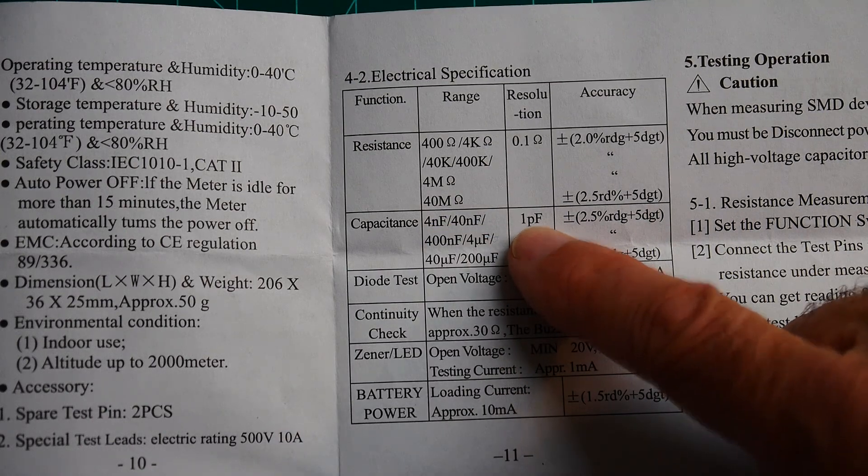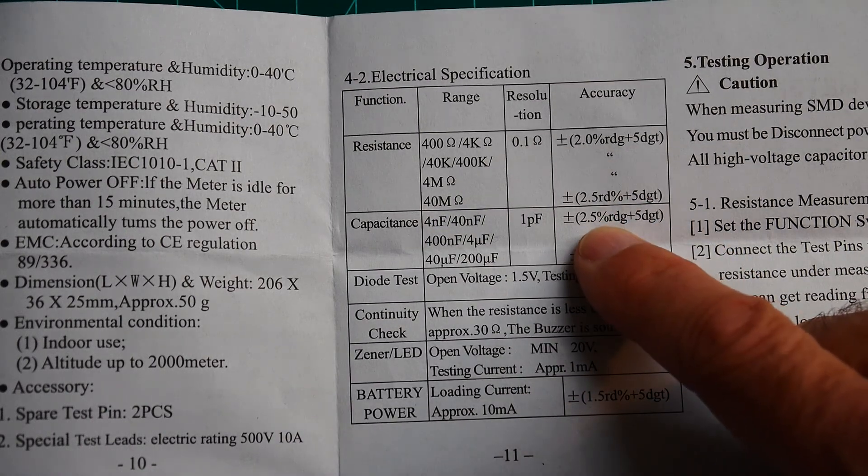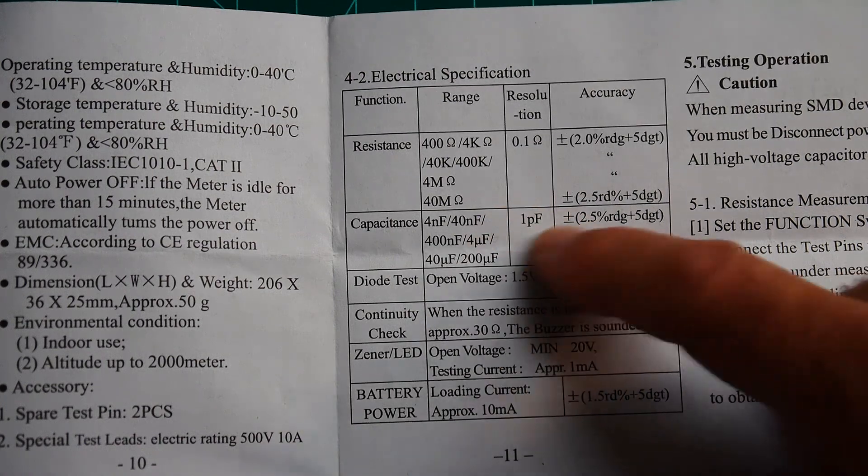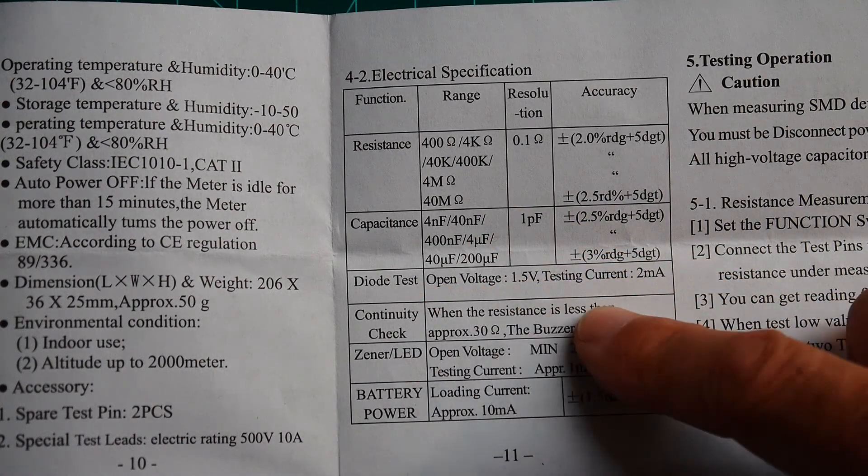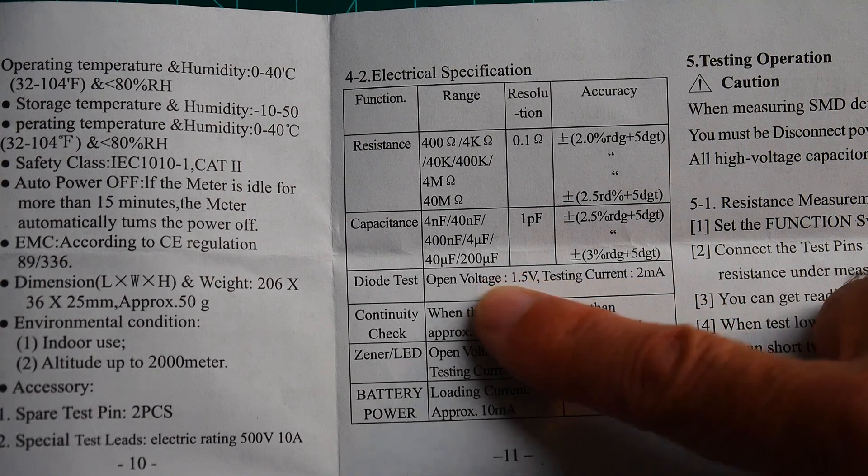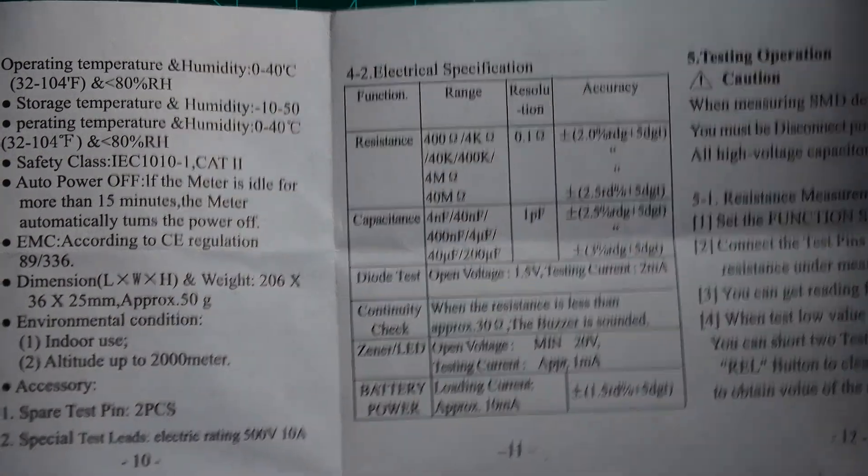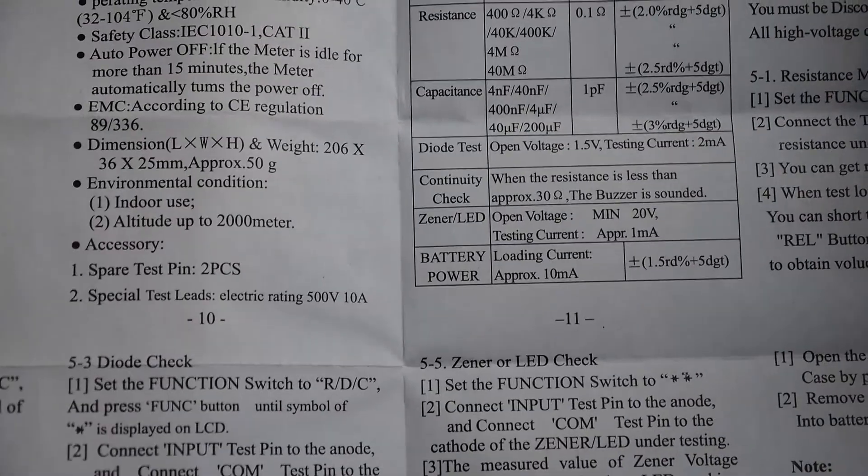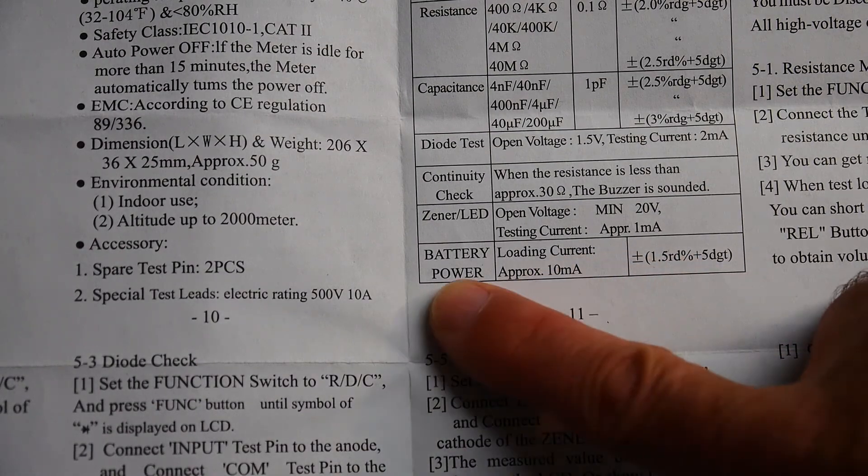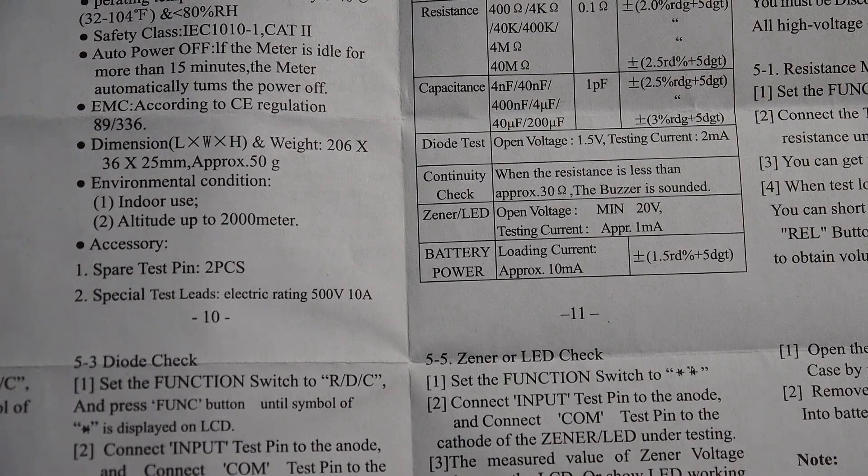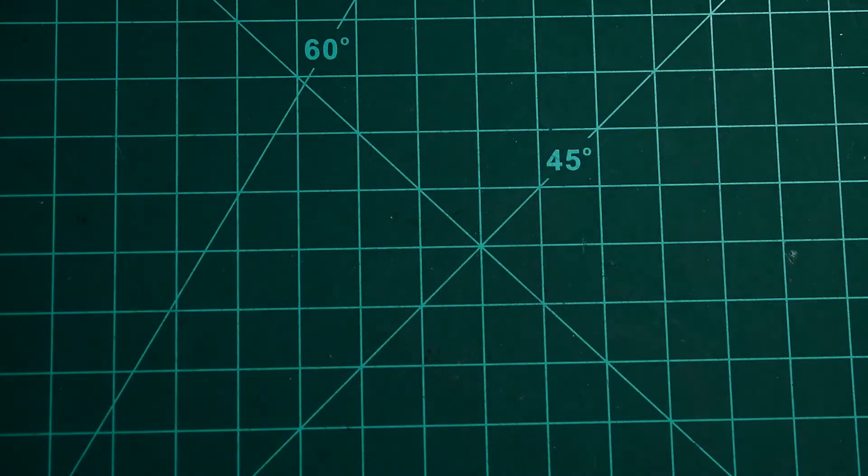0.1 ohm resolution and 2% accuracy and 2.5% accuracy. That's not very good. But these things are really valuable while you're loading a board to make sure you've got the right part. Capacitance, it has a 1 picofarad resolution. Again, it's 2.5%, 3%. Yeah, I think we should just try it out. More fun.